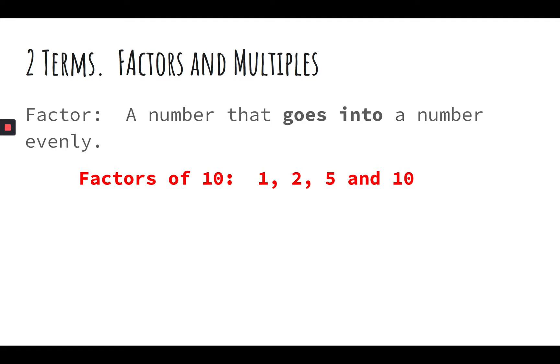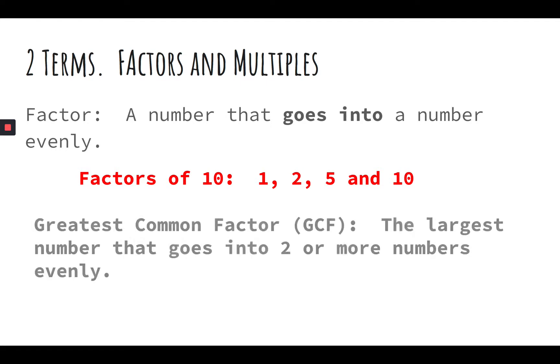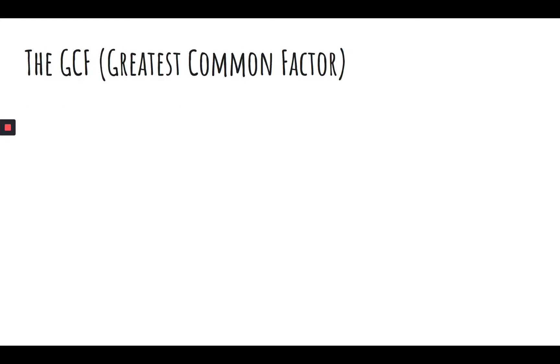Again, what you're asked to find in your assignment today is a greatest common factor, often abbreviated as GCF. And the greatest common factor is the largest number that goes into two or more numbers evenly. So let me explain that a different way. Again, GCF is greatest common factor.